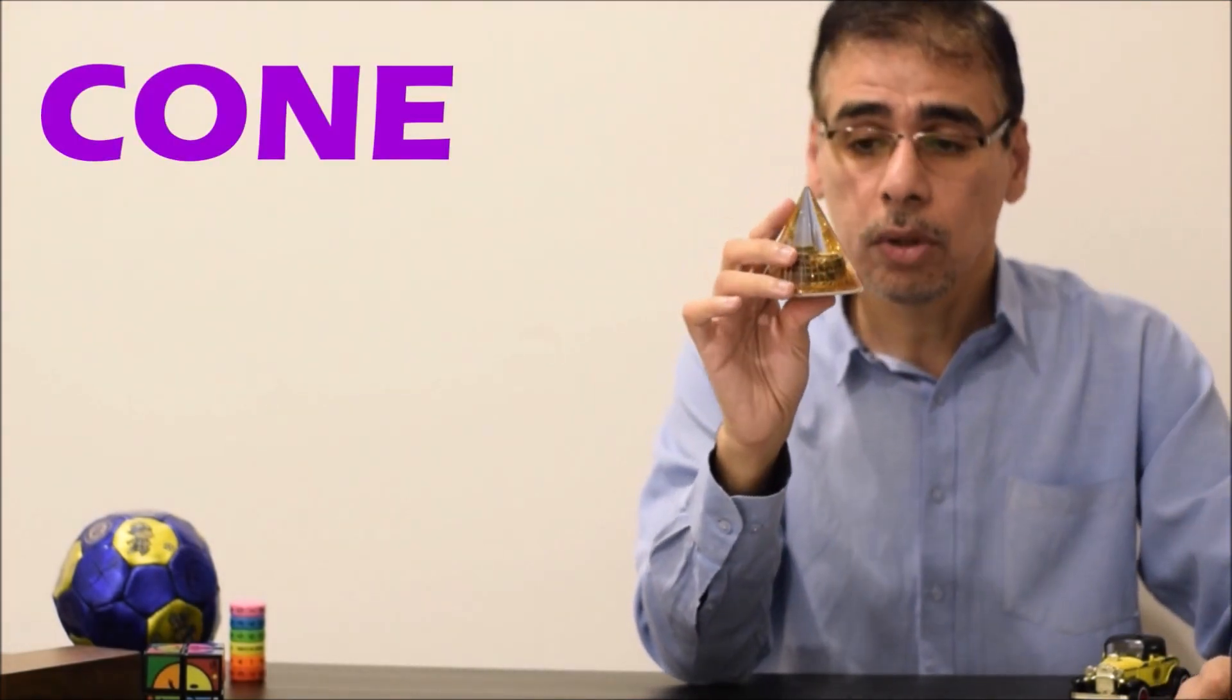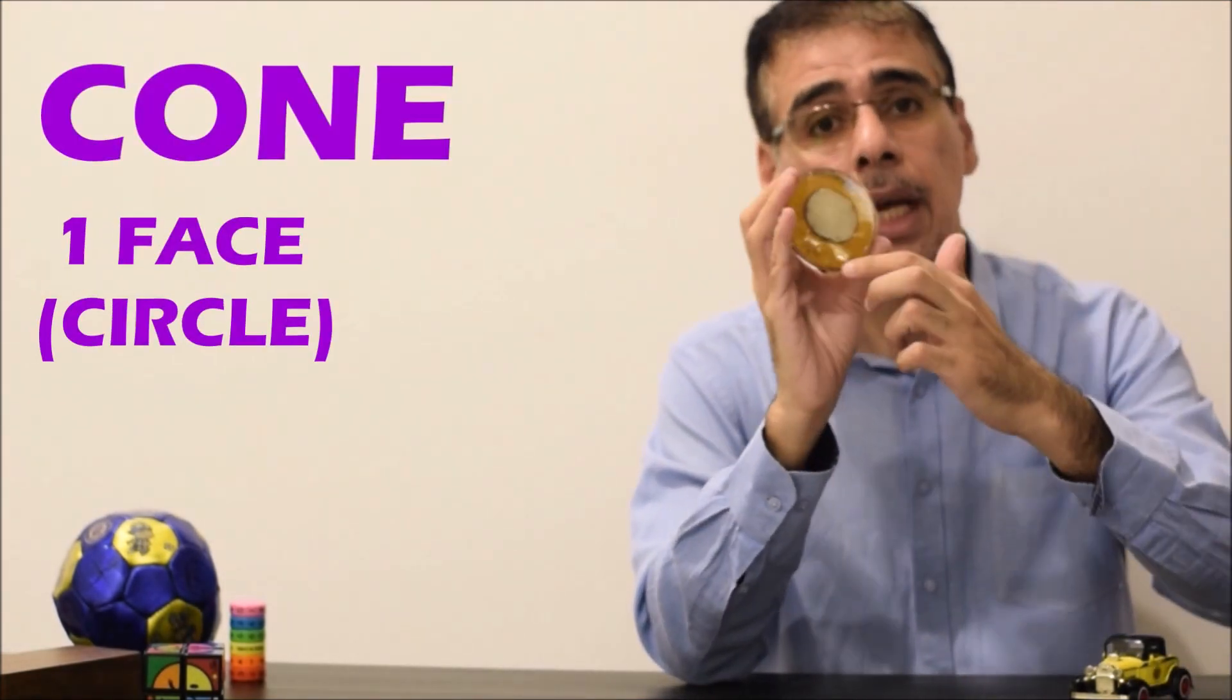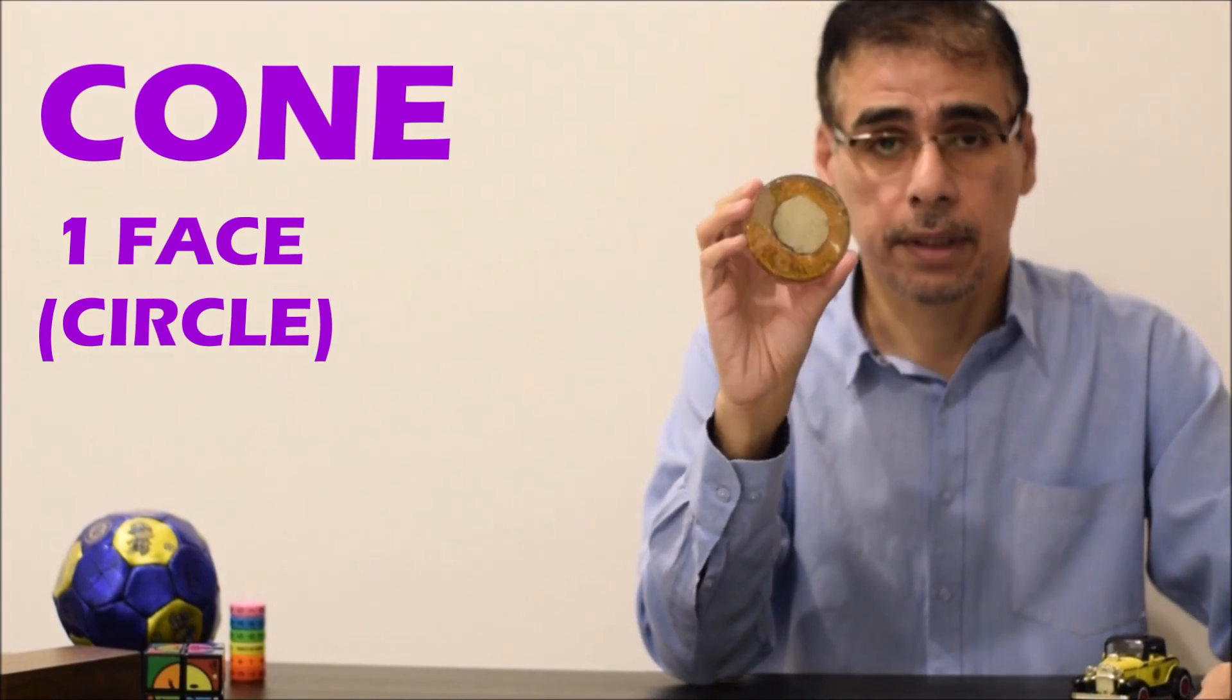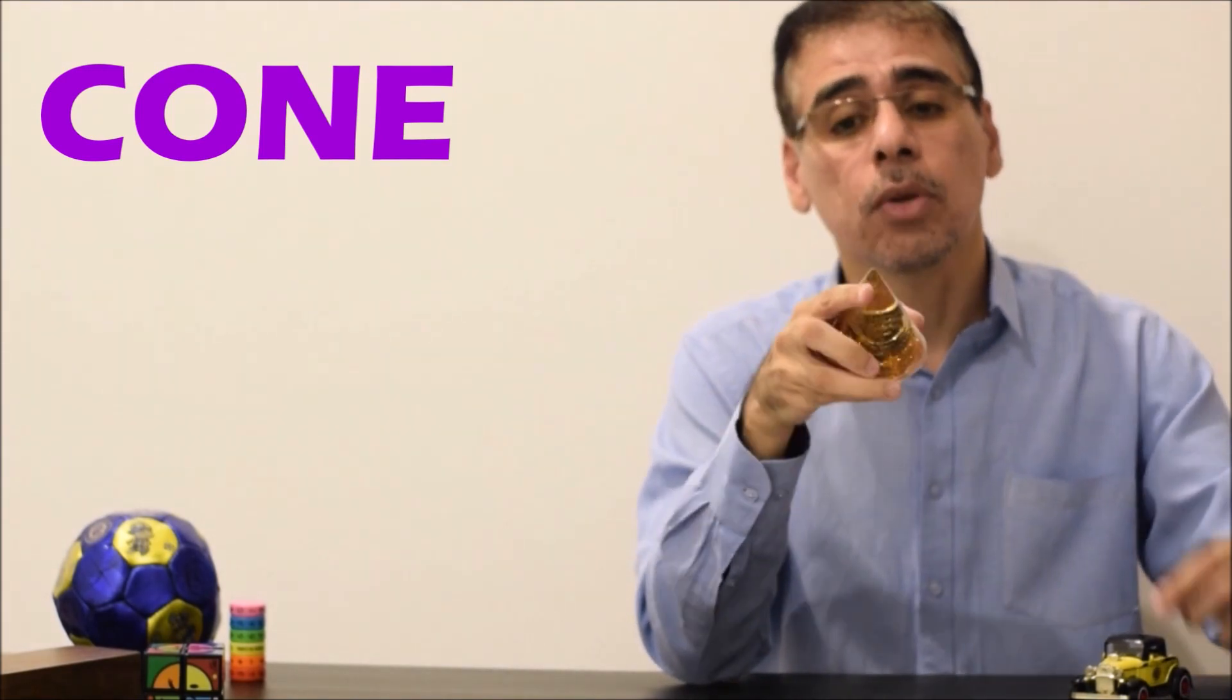The third shape is the cone. The cone has only one flat face, and it looks like the circle. And it has only one vertex.